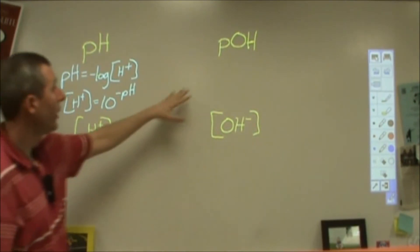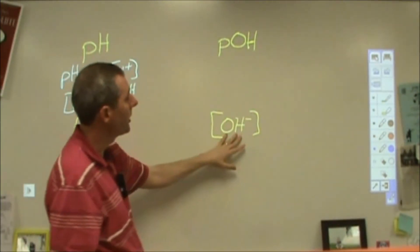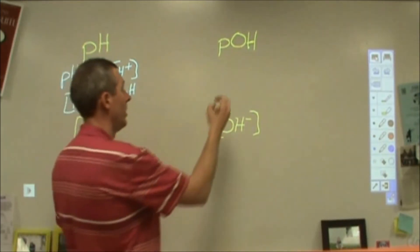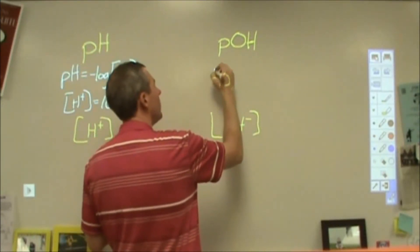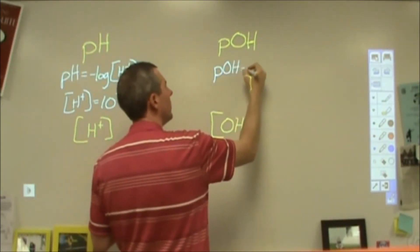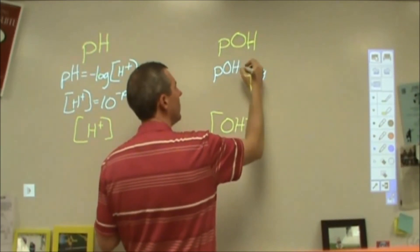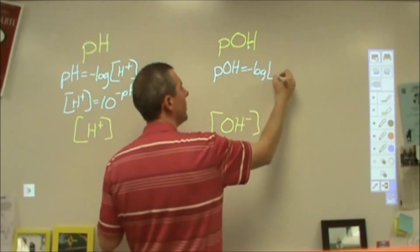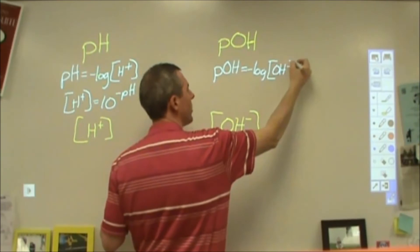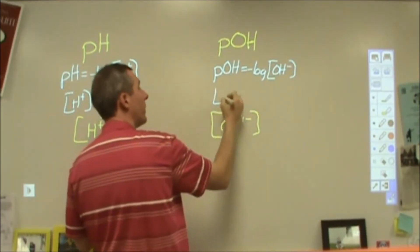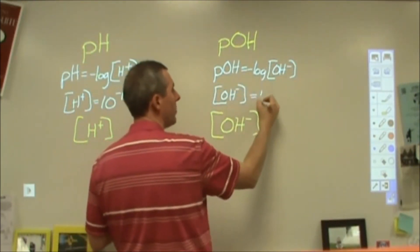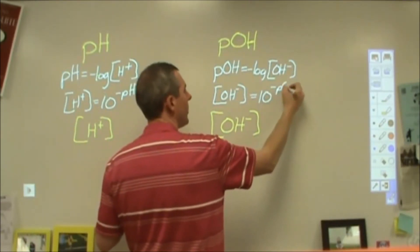Over here, same thing, but now instead of pH and H⁺, we have pOH and OH⁻. So pOH, p always means the negative log. This would be the negative log of the hydroxide ion concentration. And the reverse of that, if I want to know the hydroxide ion concentration and I know the pOH, I can do 10 to the negative pOH.